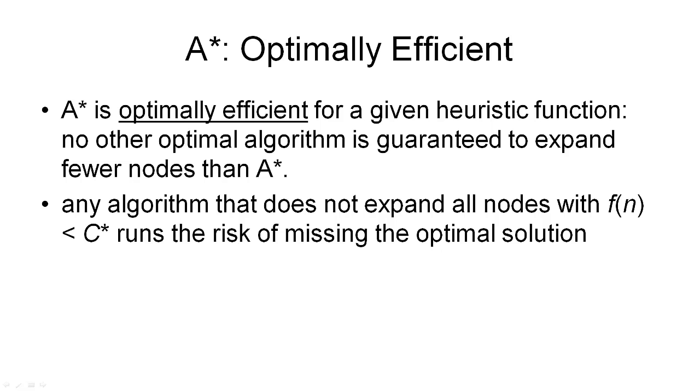Here is another property of A star. Namely, A star is optimally efficient. What this means is that no other optimal algorithm is guaranteed to expand fewer nodes than A star. This is, of course, true for a given specific heuristic function. What this gives us is that any other algorithm that guarantees us an optimal solution must expand at least as many nodes as A star for a given heuristic function.